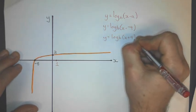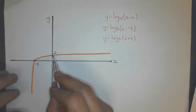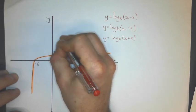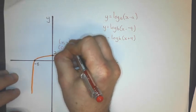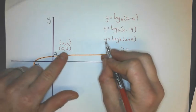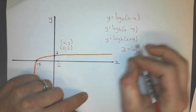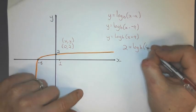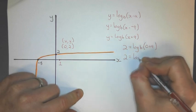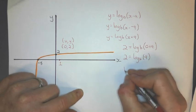And now I'll substitute a point in, and I'll use the y-intercept here, which is 0, 2 will stand for x, y to solve for the base. And so I get 2, because that's the y, log base b, and x is just 0, 0 plus 9. And so I get 2 equals log base b, 9.